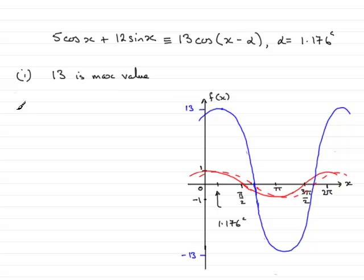And for the second part of this question, we're asked to give the value of x that gives this maximum value. Well as you can see, it is 1.176 radians.